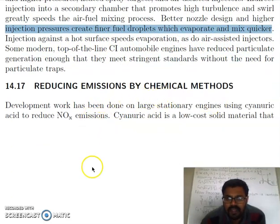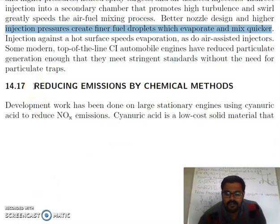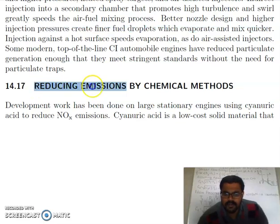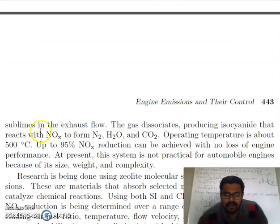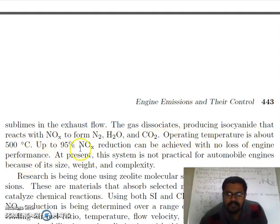There are other methods to reduce pollution or the formation of unburnt soot particles — reducing emissions by chemical methods. Development work has been done on large stationary engines using cyanuric acid to reduce NOx emissions. Cyanuric acid is a low-cost solid material that sublimes into the exhaust flow; the gas dissociates producing isocyanate, which reacts with NOx to form nitrogen, water, and CO2. Operating temperature is about 500 degrees Celsius, and up to 95% NOx reduction can be achieved with no loss of engine performance.